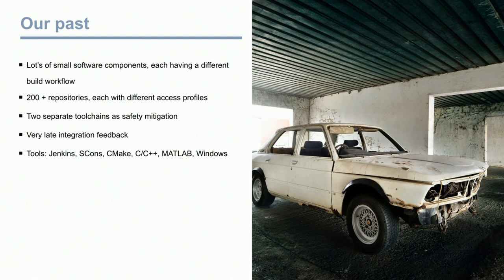It hasn't always been that way. Just four years ago, our software was split into 200 different software components, all in different repositories. For most of those, you didn't have the access rights, so you couldn't see what your fellow coworkers were doing. We also had to set up two different build toolchains because we didn't trust either one of them — just to make sure we don't screw up and you don't die when you drive our cars. The feedback was also very delayed, so it took a lot of time for developers to know if they introduced a new bug.